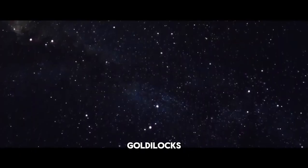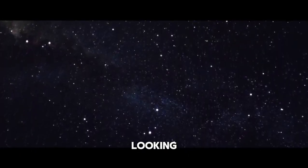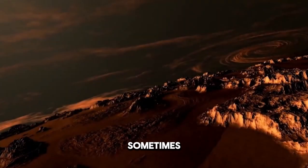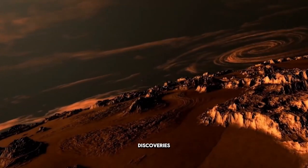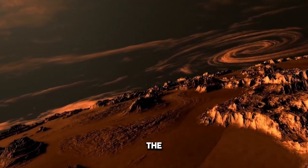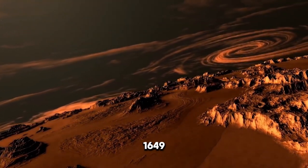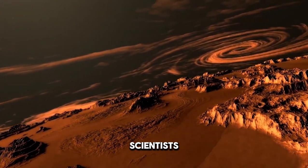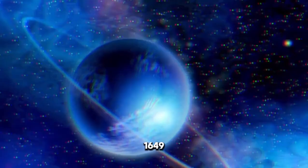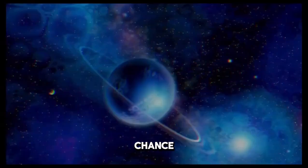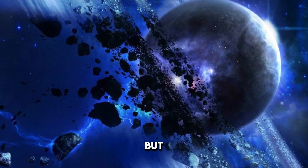When we're searching for a Goldilocks planet, we're essentially looking for the perfect match. Sometimes, we stumble upon incredible discoveries by sheer accident, like the case of Kepler-1649c. In 2020, scientists came across Kepler-1649c by chance. Initially, it was mistaken for something else, but now we realize it could be quite Earth-like.